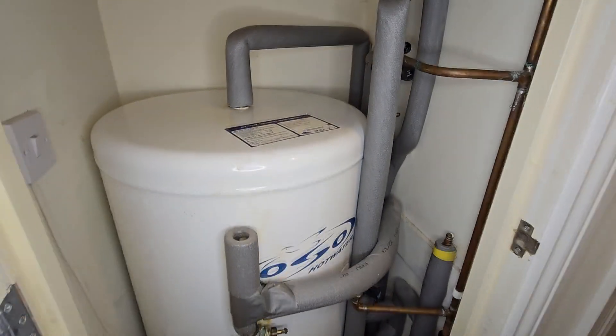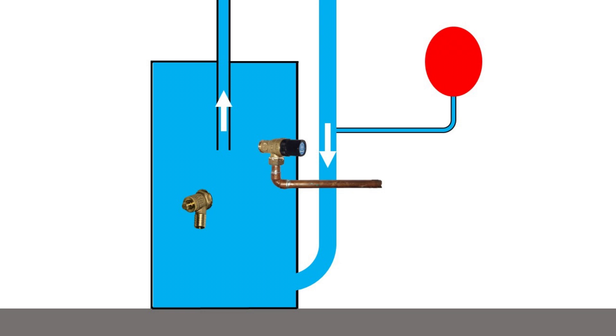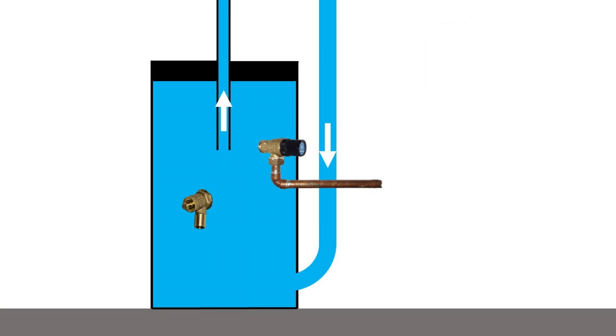An unvented hot water cylinder may have an expansion vessel attached. If there is no expansion vessel connected to the water supply, it likely relies on an internal air bubble.